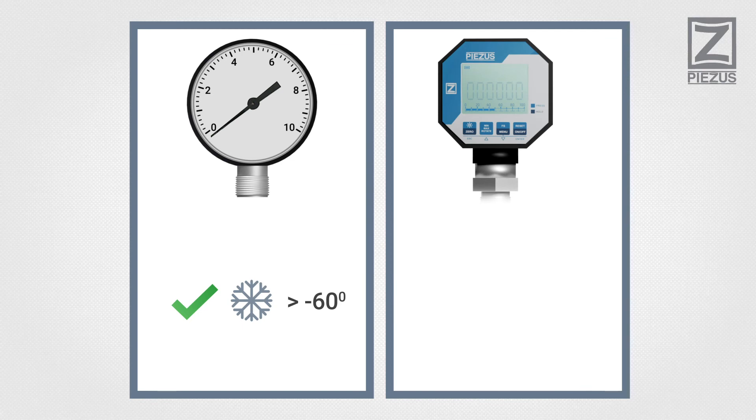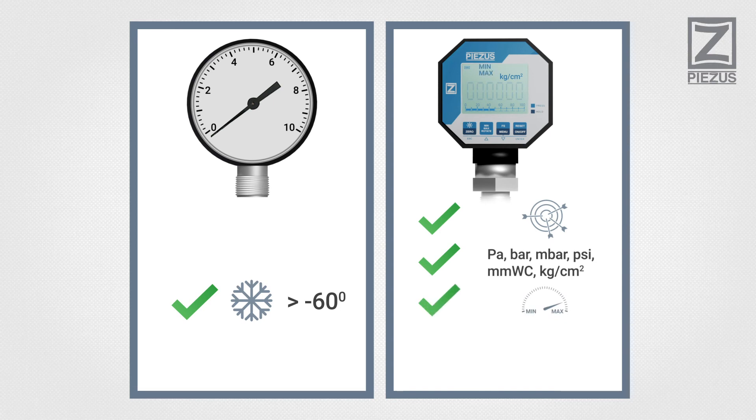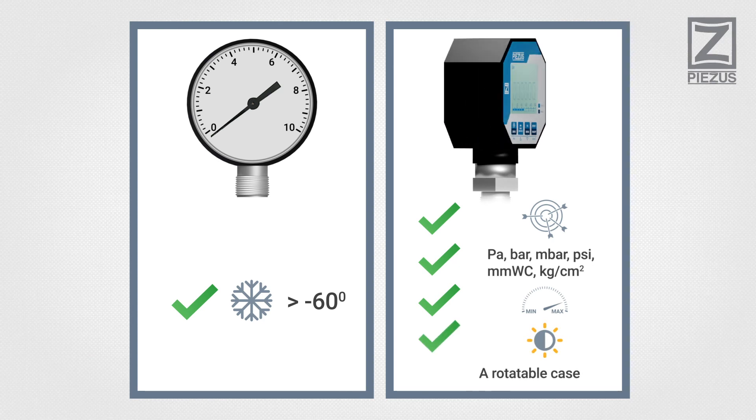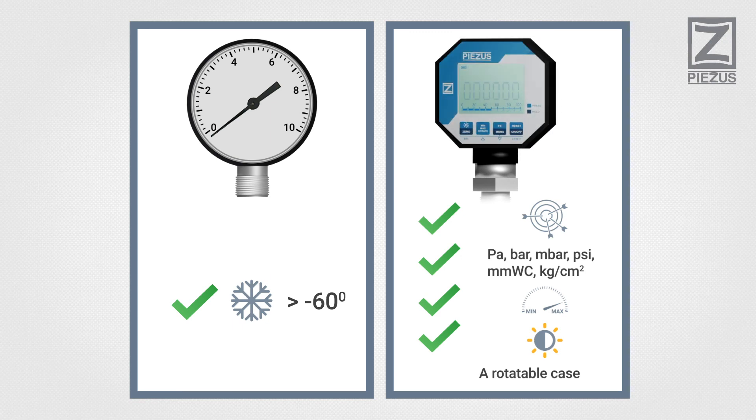A digital pressure gauge has a greater accuracy than mechanical ones. A choice of measurement units is available. Peak values can be recorded when using a digital gauge. Backlight helps to read data in the twilight. A rotatable case allows turning the display to make readings more visible.